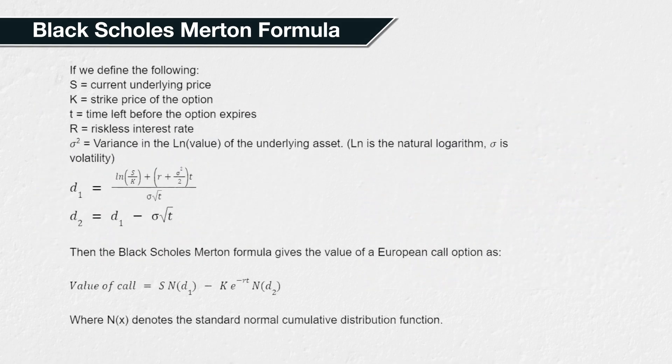If we define the following: S equals the current underlying price, K equals the strike price of the option, T equals the time left before the option expires, r is the riskless interest rate, sigma squared is the variance in the log value of the underlying asset, ln is the natural logarithm, and sigma is the volatility.